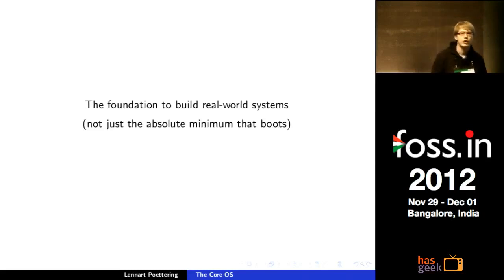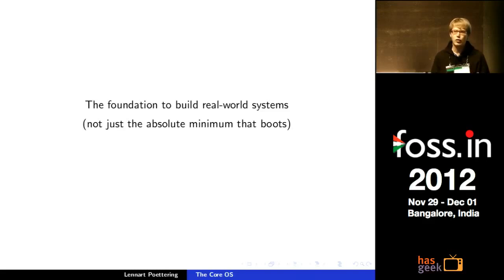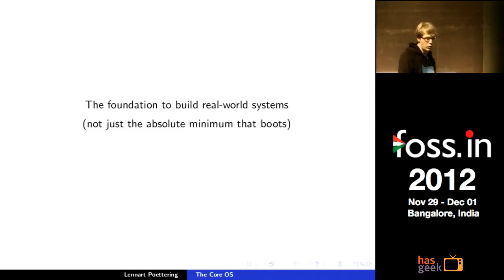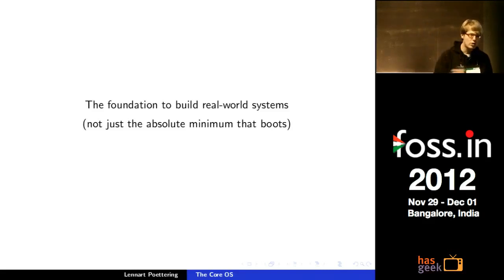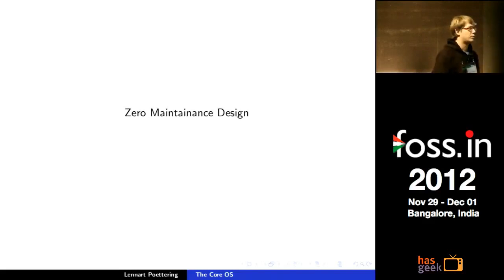Systemd as a CoreOS is supposed to be something you build real-world systems from — not the absolute minimum that boots, but more than that. When we decide if something belongs in the CoreOS, we always have to ask where to put the limit. We knowingly put the limit not at the absolute minimum, which some people probably would do.